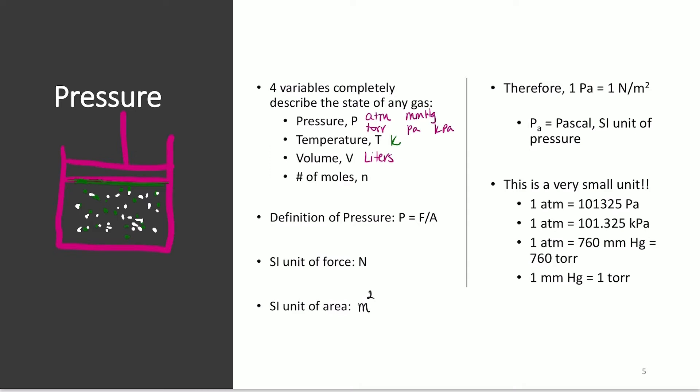The SI unit of force is N, capital N. And the SI unit of area is meter squared. So 1 pascal, which is my SI unit for pressure, is equal to 1 newton per meter squared.